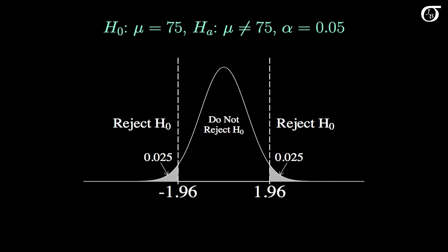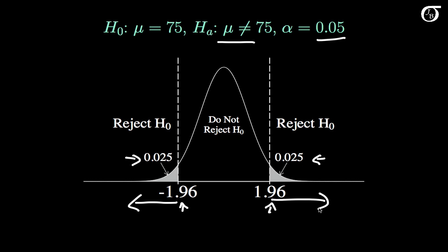Here I've drawn a standard normal curve, since the test statistic has a standard normal distribution if the null hypothesis is true. We have a two-sided alternative hypothesis, so we split this alpha level evenly into the two tails, putting 0.025 in the right tail and 0.025 in the left tail. The z values that make this happen are minus 1.96 and 1.96. We are going to reject the null hypothesis if we get a z value less than or equal to minus 1.96, or greater than or equal to 1.96.